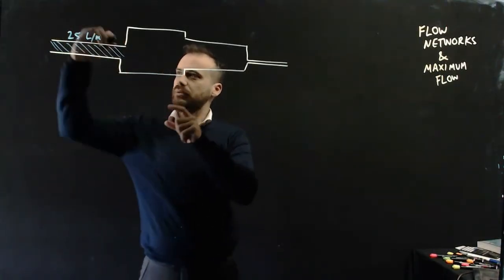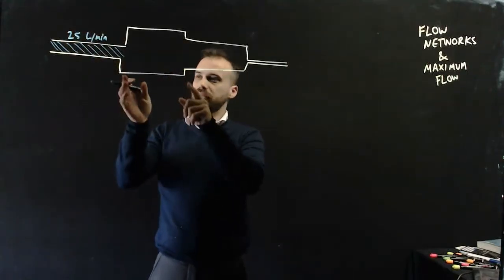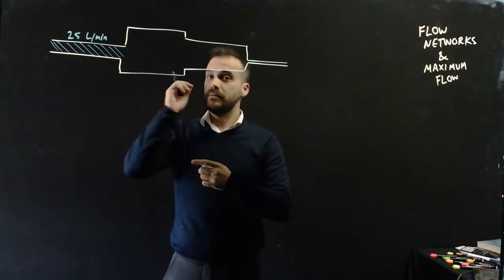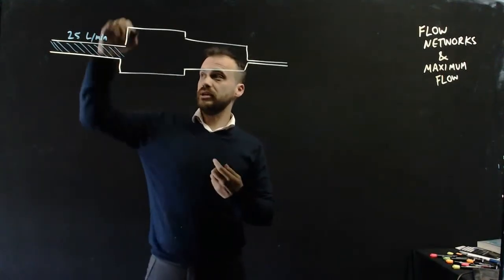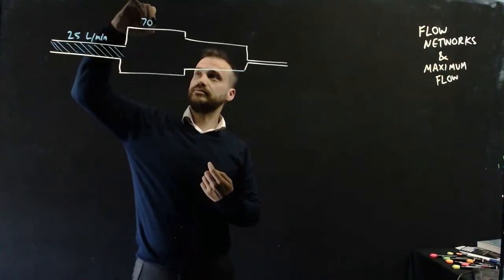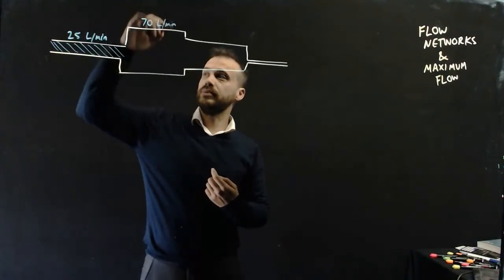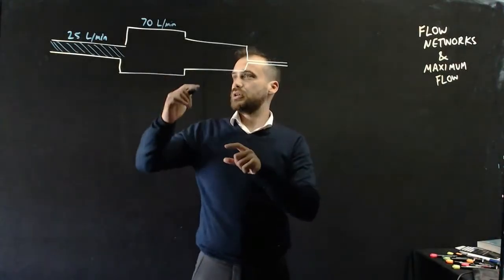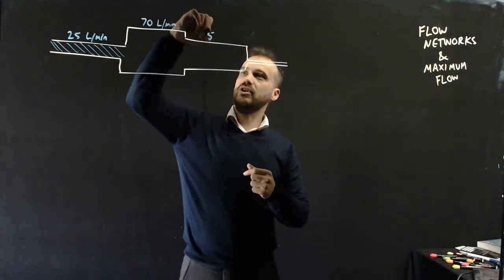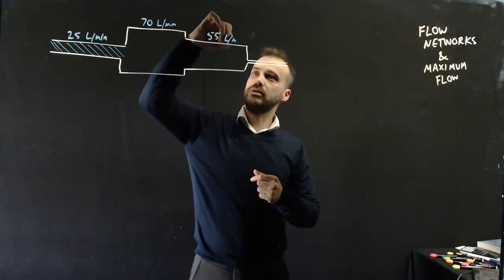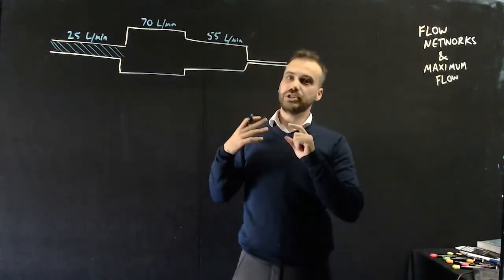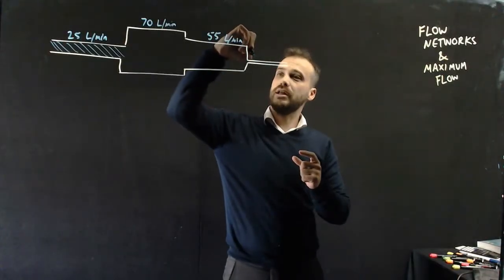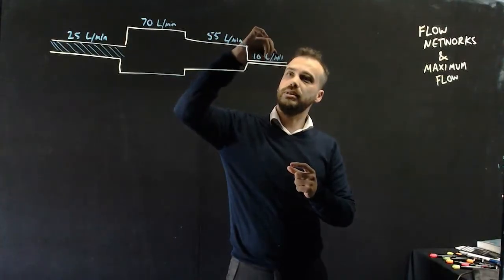This pipe is much larger, so water could flow through it much faster - let's say 70 litres per minute. This pipe is smaller than that one but larger than the first, so maybe 55 litres per minute. And this pipe is the smallest of all - water could only flow through it at 10 litres per minute.